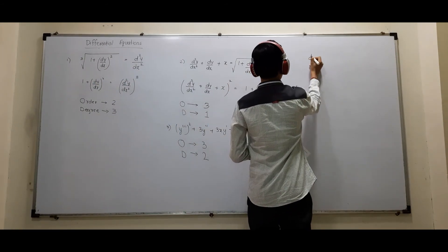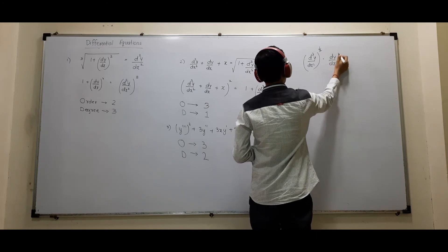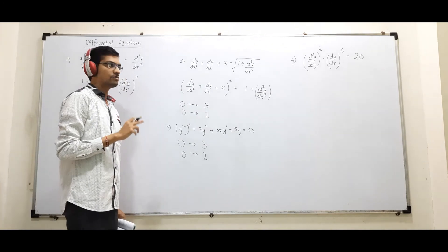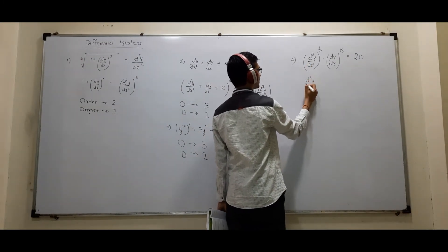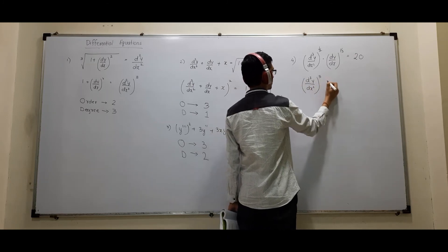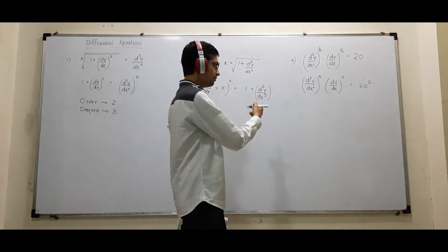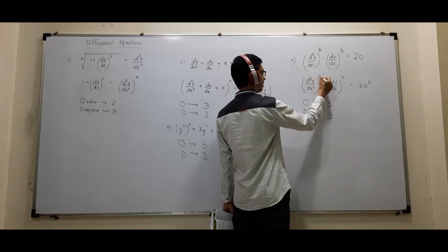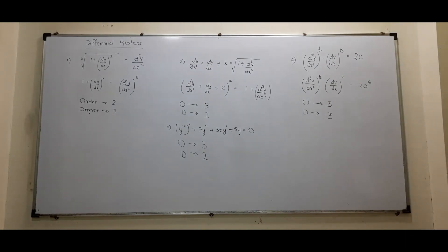Final problem: (d³y/dx³)^(1/2) · (dy/dx)^(1/3) = 20. Both derivatives are under radical signs. To remove both, I raise both sides to the 6th power: (d³y/dx³)³ · (dy/dx)² = 20⁶. Now the order is 3 and the degree is also 3. I hope your doubts about finding order and degree are now clear.